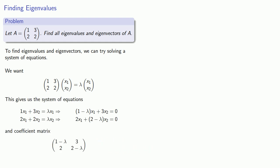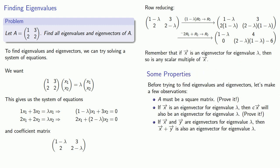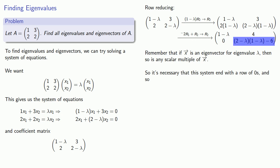We can row reduce this system of equations. Remember that if x is an eigenvector for eigenvalue lambda, then so is any scalar multiple of x. That means there will be an infinite number of solutions (x1, x2), so we must be able to parameterize them — we need at least one free variable. The only way that can happen is if we have a row of zeros somewhere, so the system must end with a row of zeros.